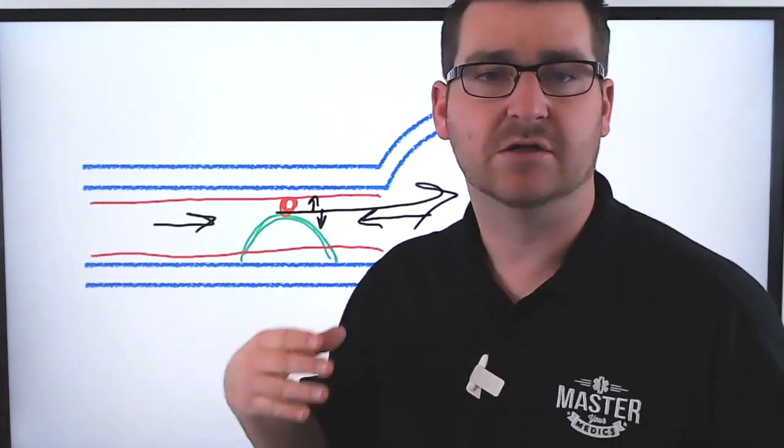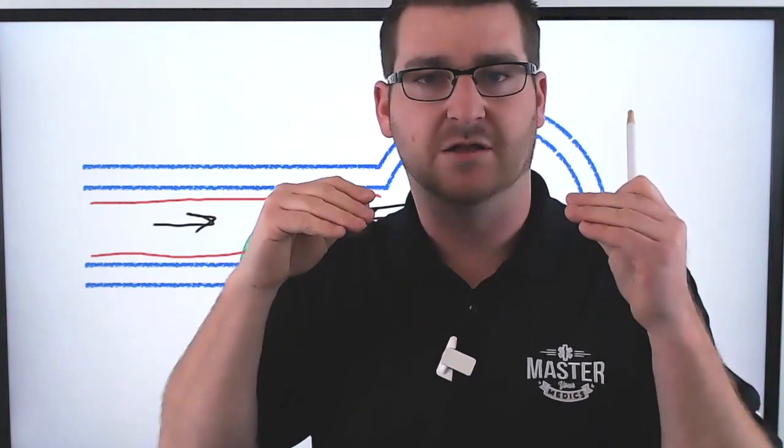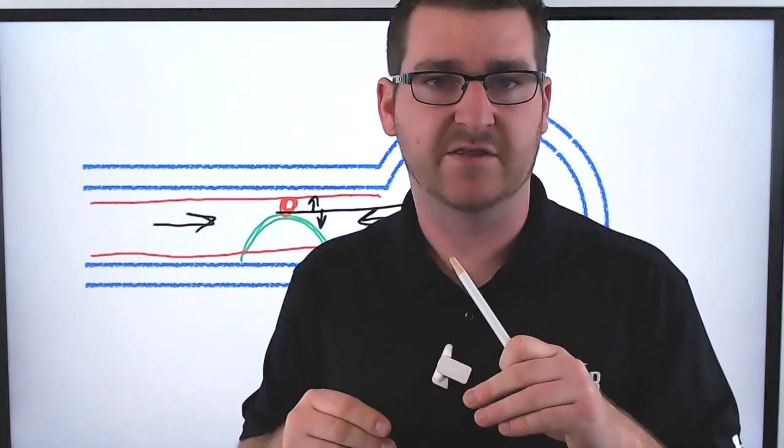Now, when these things start to collapse, I was just talking about how big breaths, they start to collapse. Well, the bronchioles aren't the only thing that start to collapse. The alveoli start to collapse as well.